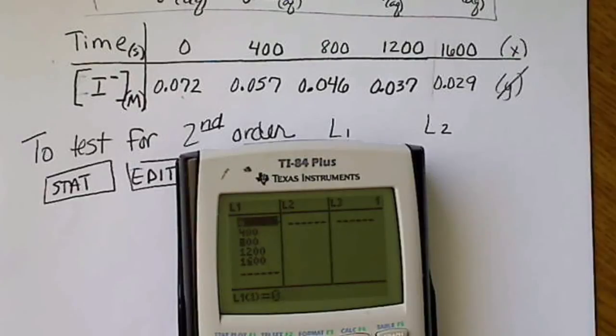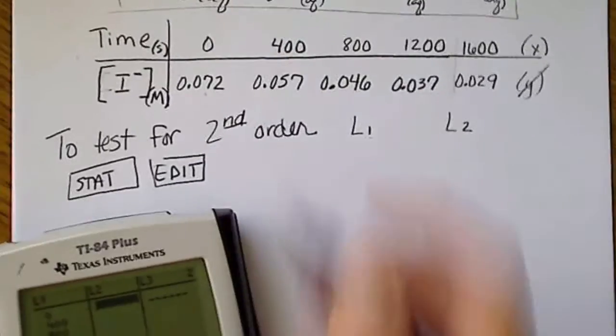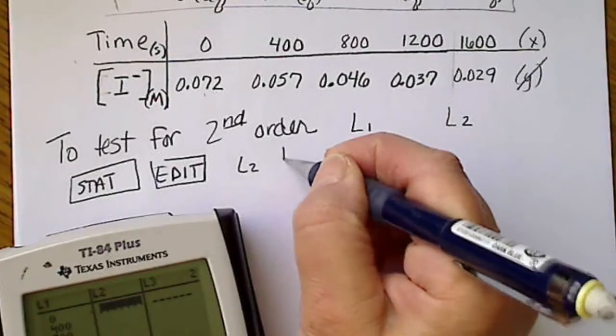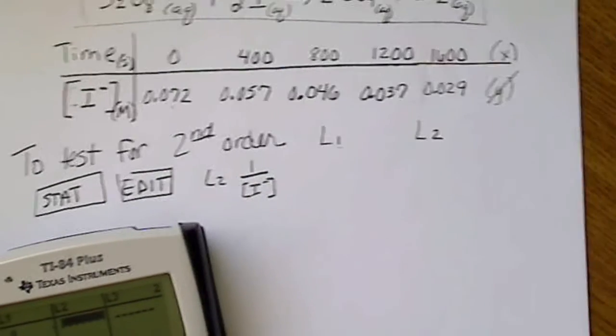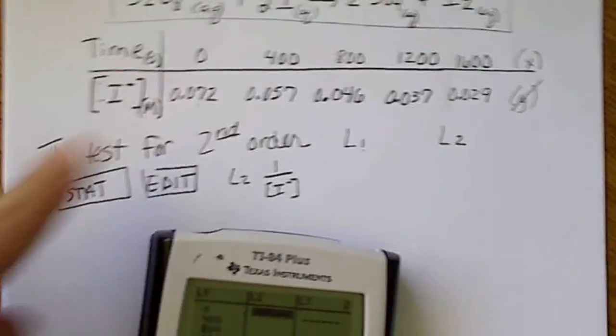Now L2, since I'm testing for second-order, L2 is going to be 1 over the concentration of I-. So I can do that individually.